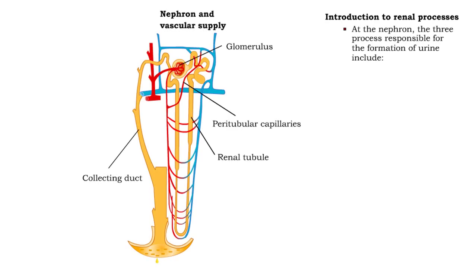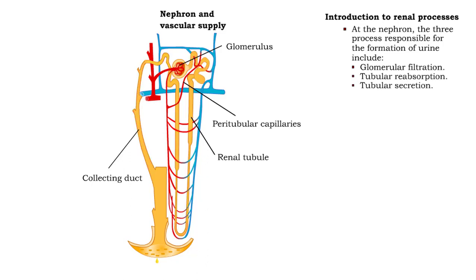Three processes occurring at the nephron are responsible for the formation of urine. They include glomerular filtration, tubular reabsorption, and tubular secretion.